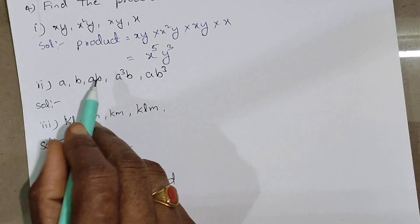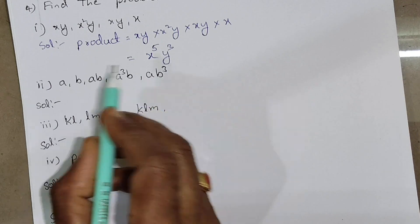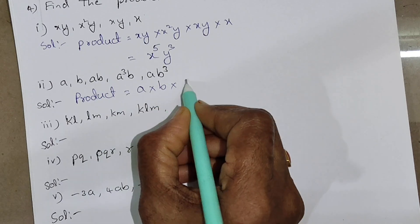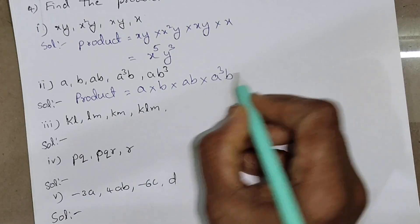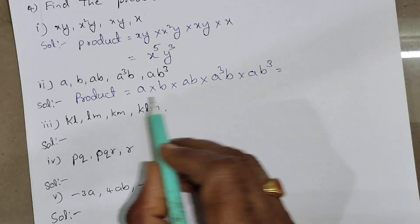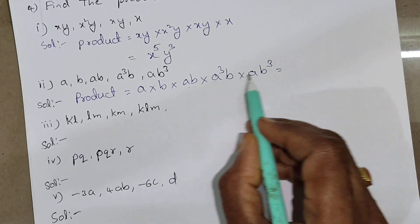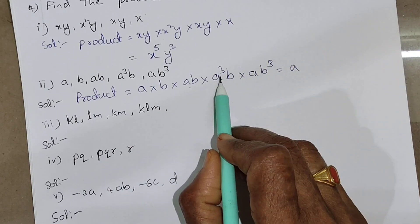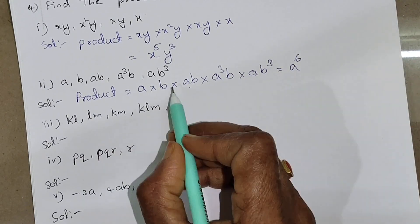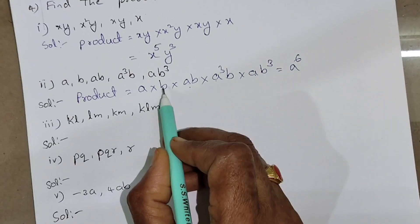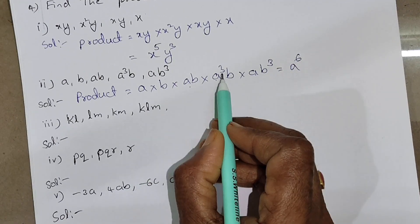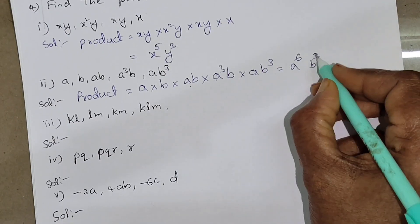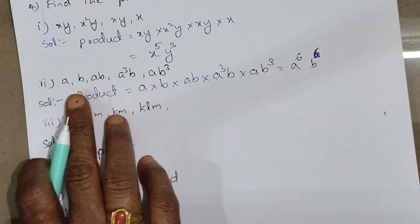Second one: a, b, ab, a cubed b, ab cubed. Product equals a into b into ab into a cubed b into ab cubed. Collecting a terms: a to the power 1 plus 1 plus 3 plus 1 equals a to the 6th. Collecting b terms: b to the power 1 plus 1 plus 1 plus 3 equals b to the 6th. So the product is a to the 6th times b to the 6th.